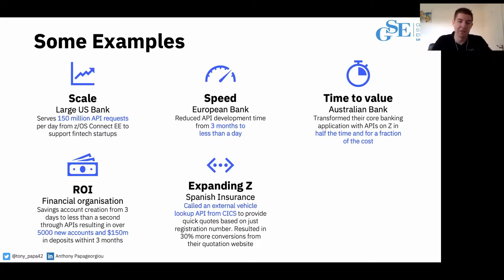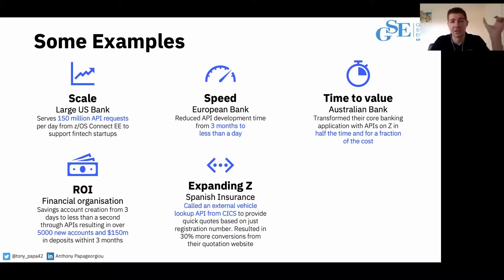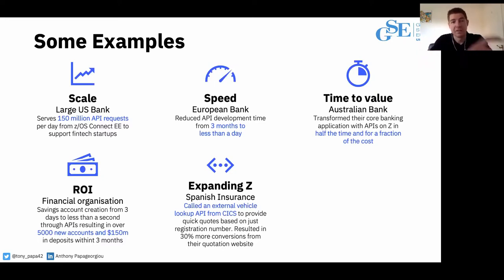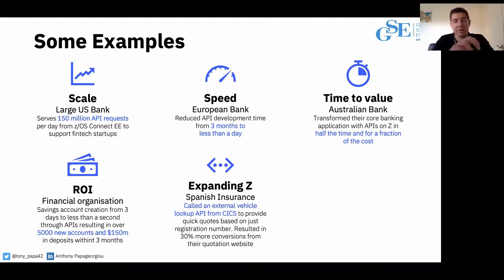Expanding what Z applications can do: a Spanish insurance company wanted to call out to a government-hosted API to do vehicle lookup based on registration number. Instead of asking customers to enter all their car details — make, model, color, registration — they changed their quotation process: give us a reg number, we'll give you a quote. The challenge was that their quotation application is in CICS, written in COBOL, and they needed to call out to that external API from within it.